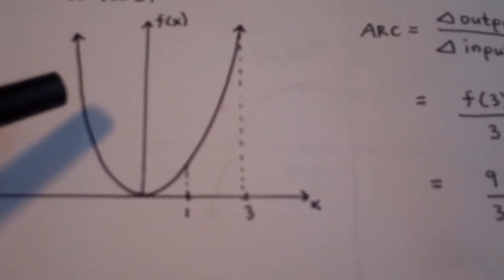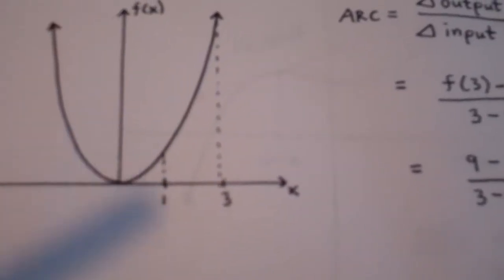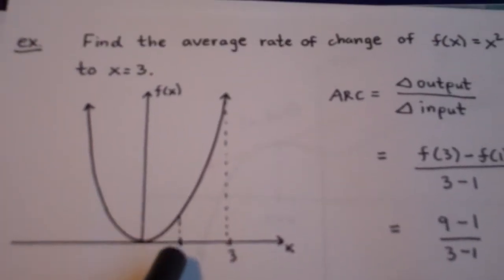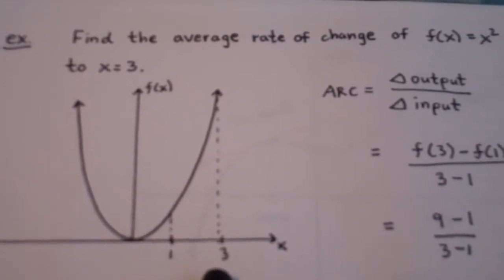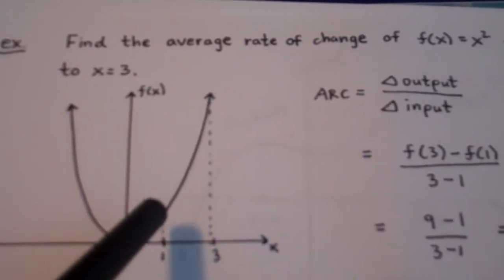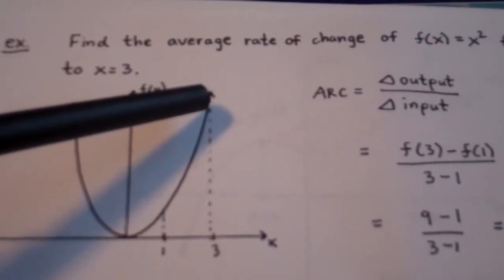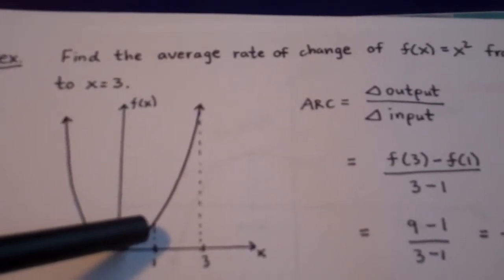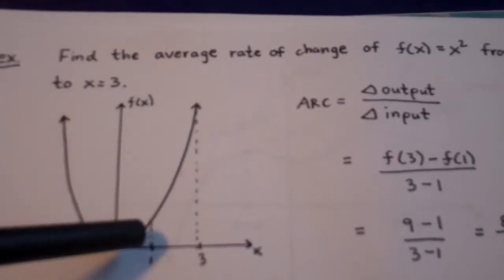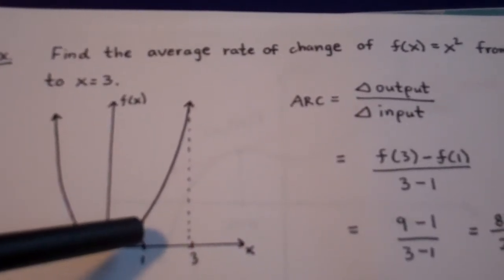I've drawn a picture of the graph of f of x equals x squared — one of our six basic functions. Here I have x equals 1 and x equals 3. Between x equals 1 and x equals 3, notice the function is always increasing, and always increasing at a different rate. Up here where x is equal to 3, the function is rising more rapidly than when x is equal to 1. The slope is always different — up at x equals 3, the slope is larger than at x equals 1.